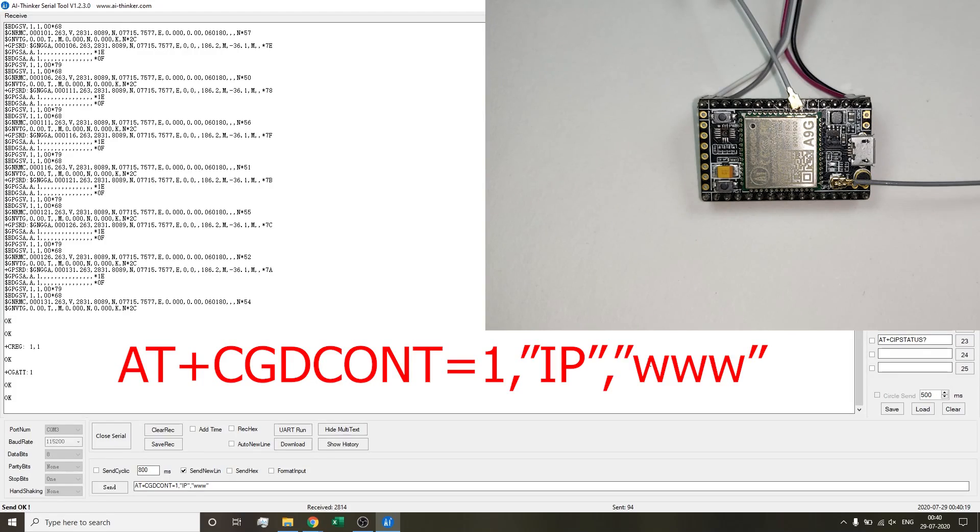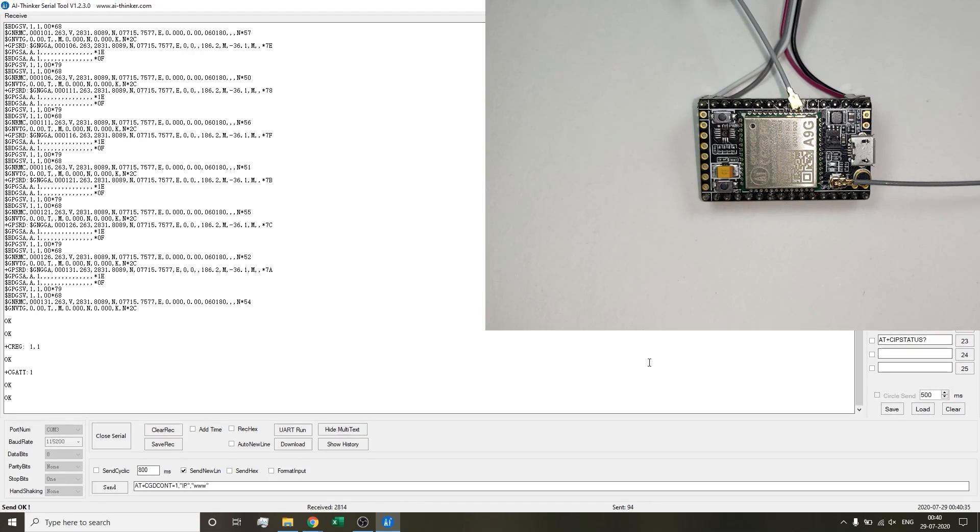You will have to search for the access point name on the internet for your particular network SIM that you will be inserting in the A9G module. Once the OK command comes in from here, this means that we are connected to the internet.